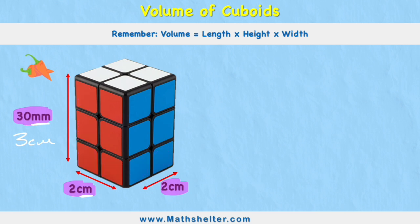So in this case, again, I would have 2 multiplied by 2 multiplied by 3. And it doesn't matter which way around I do it. I'm going to get the same answer. 2 times 2 is 4. 4 times 3 is 12 centimetres cubed.